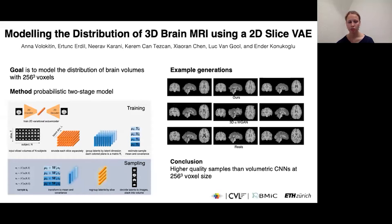We use a two-stage approach where we first model the slices using a VAE and then model the relationship between slices using a Gaussian model that is fit in the latent space. Our two-stage approach gives us a very simple probabilistic model and allows us to easily generate new brain samples.